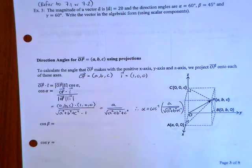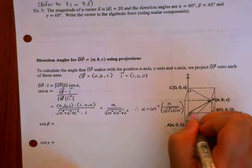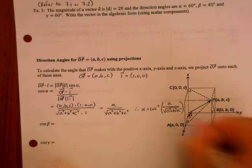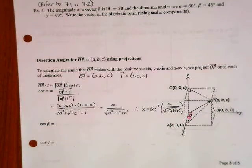So that means alpha is cos inverse of A over square root of A squared plus B squared plus C squared. So in this diagram here, if you can sort of imagine this angle is your alpha, between vector OP and the positive X axis.